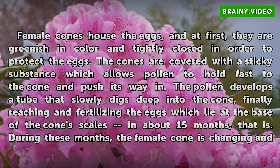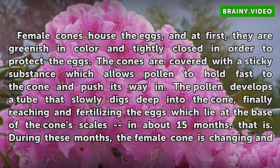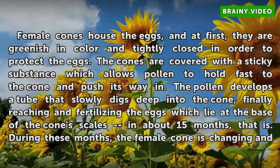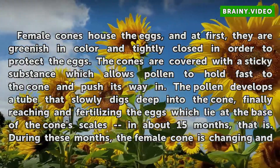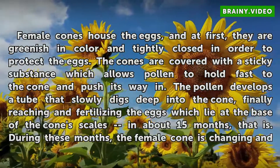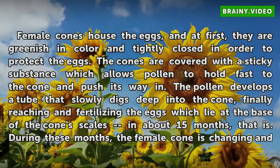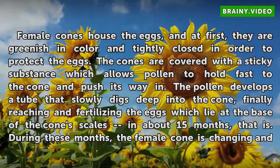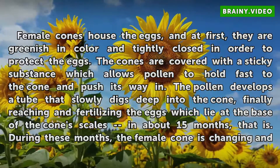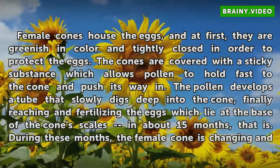Female cones house the eggs, and at first they are greenish in color and tightly closed in order to protect the eggs. The cones are covered with a sticky substance which allows pollen to hold fast to the cone and push its way in. The pollen develops a tube that slowly digs deep into the cone, finally reaching and fertilizing the eggs, which lie at the base of the cone scales.